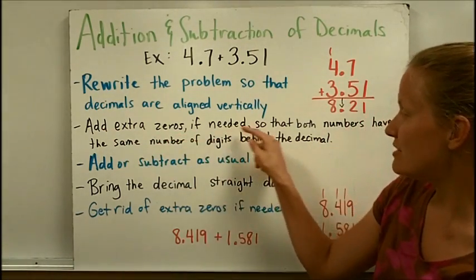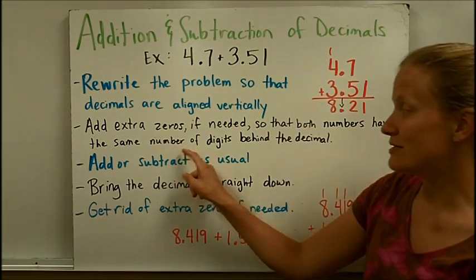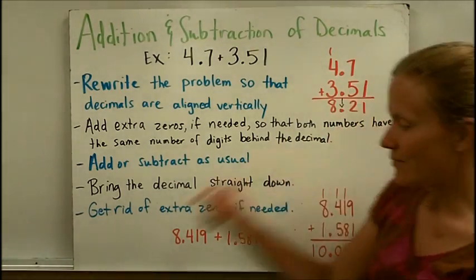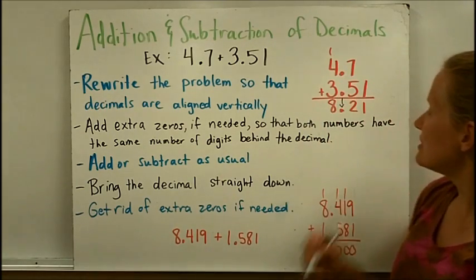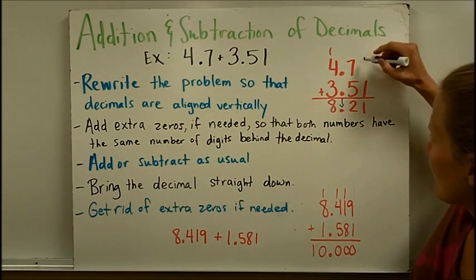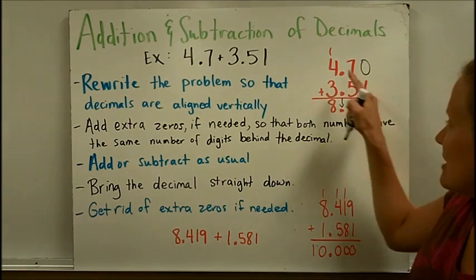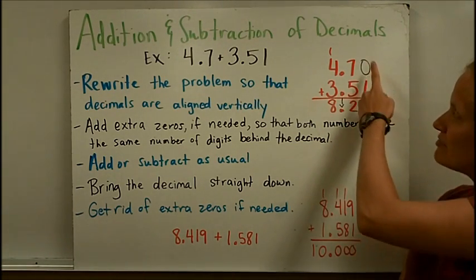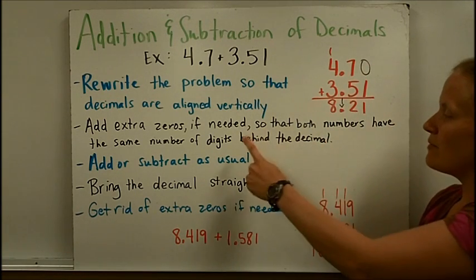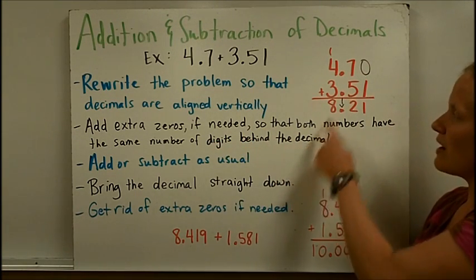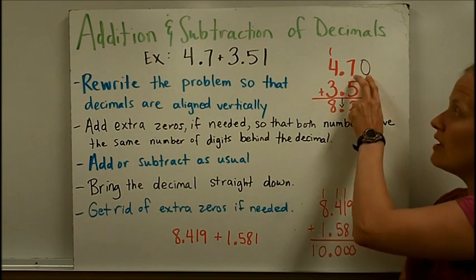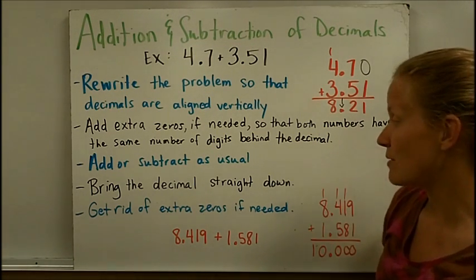Add extra zeros if needed so that both numbers have the same number of digits behind the decimal. In this example, we need to add an extra zero here because 7 tenths is the same as 70 hundredths. That way we have digits to add in every column. Since this number had the most with two digits behind the decimal, I want two digits here in the first number.